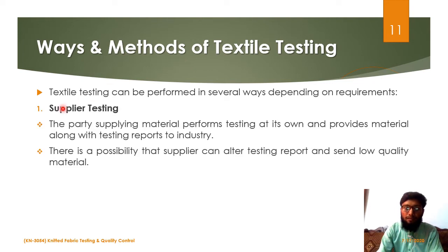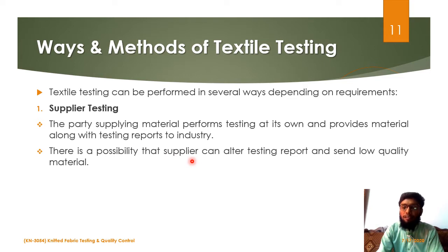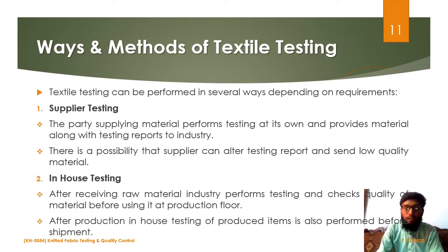The ways of textile testing: the first one is supplier testing, where the party supplying raw material performs the testing of raw material on its own and provides the raw material along with a testing report to the industry. There is a possibility that the supplier can alter the report in order to show that their supplied material is of good quality. The second one is in-house testing, where after receiving the raw material, the industry performs testing and verifies the quality of raw material, and after production, the industry also tests the produced goods before supplying them to the customer.